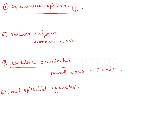Focal epithelial hypoplasia, also known as Heck's disease, is more of an American lesion. Patients have multiple small dome-shaped epithelial proliferations caused by HPV subtypes 13 and 32.